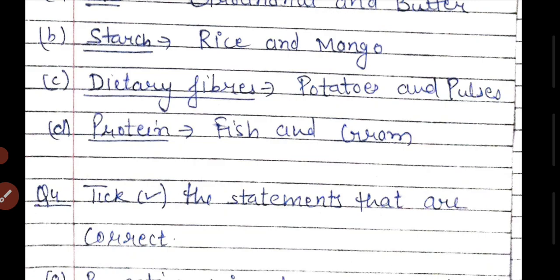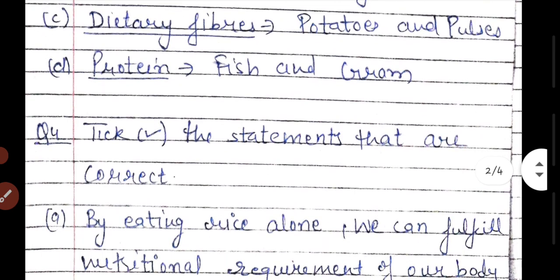From potatoes and pulses we get dietary fibers. For protein, we get it from fish and gram. People who eat proteins have good muscles. Protein is used in different foods such as eggs, fish, and beans — protein is used in the whole diet.